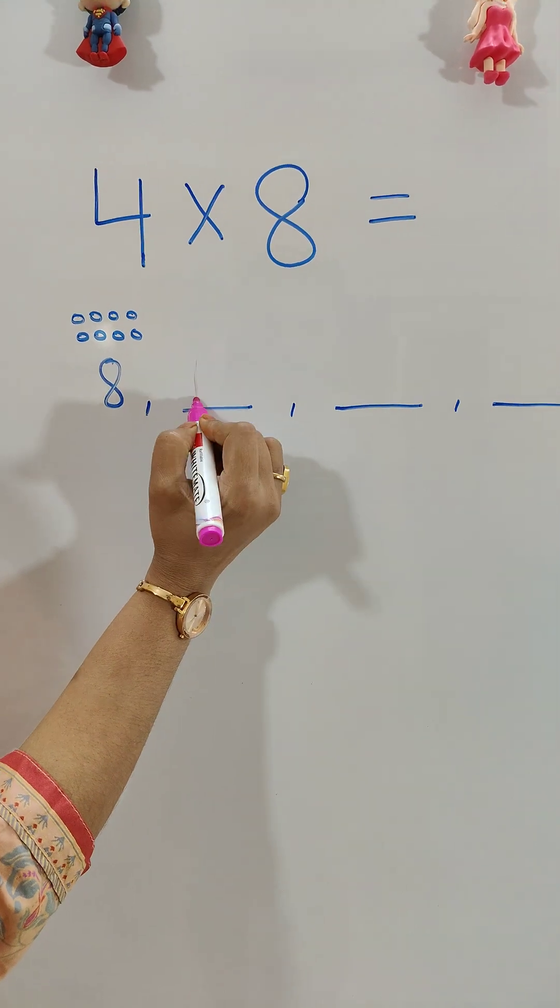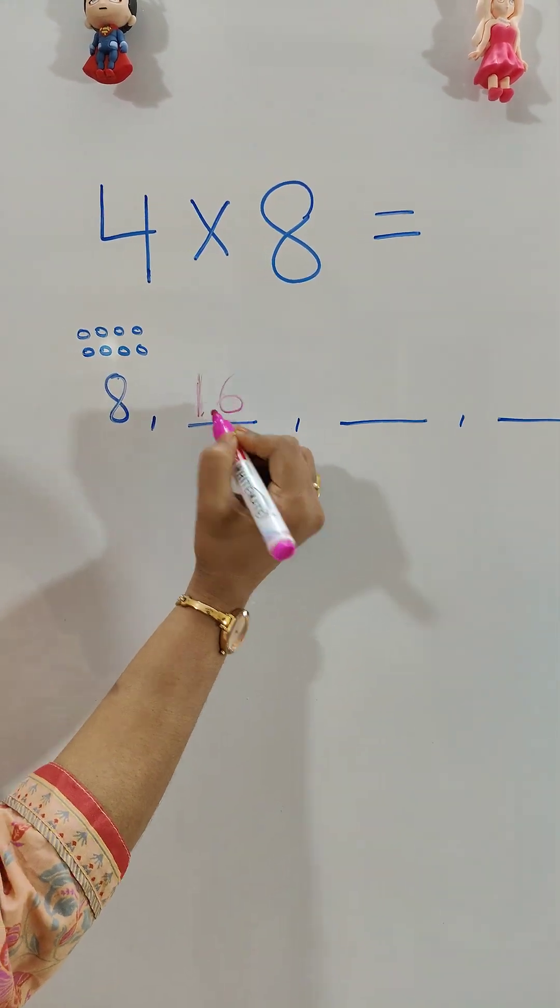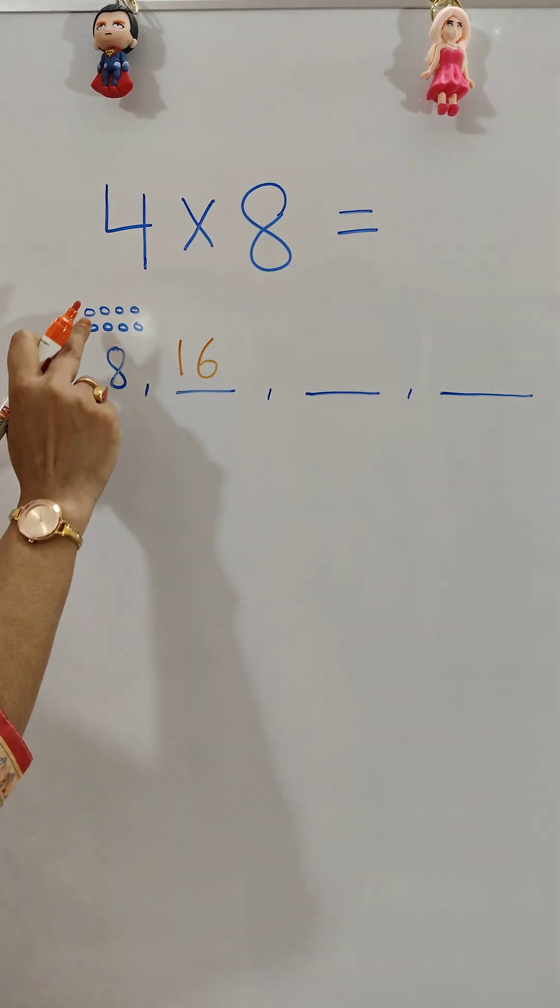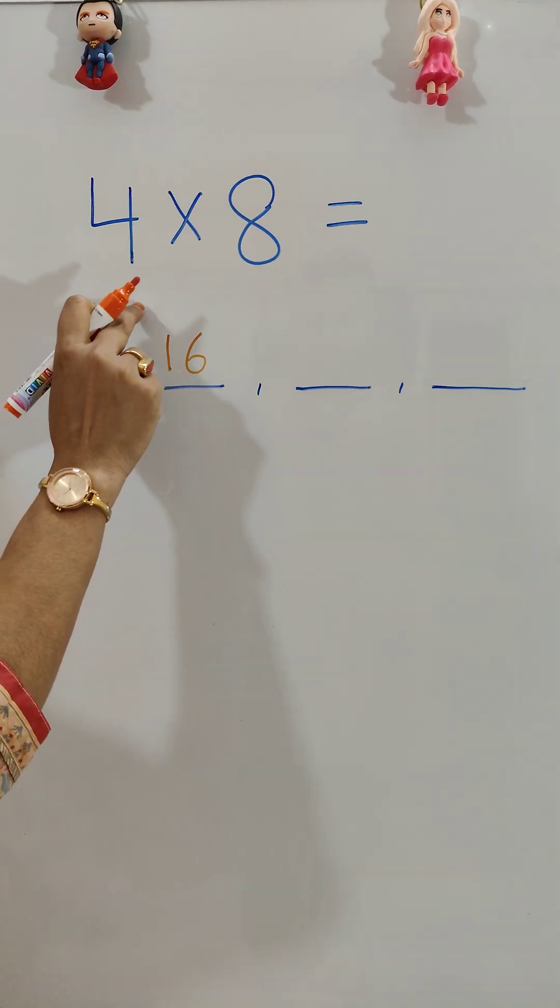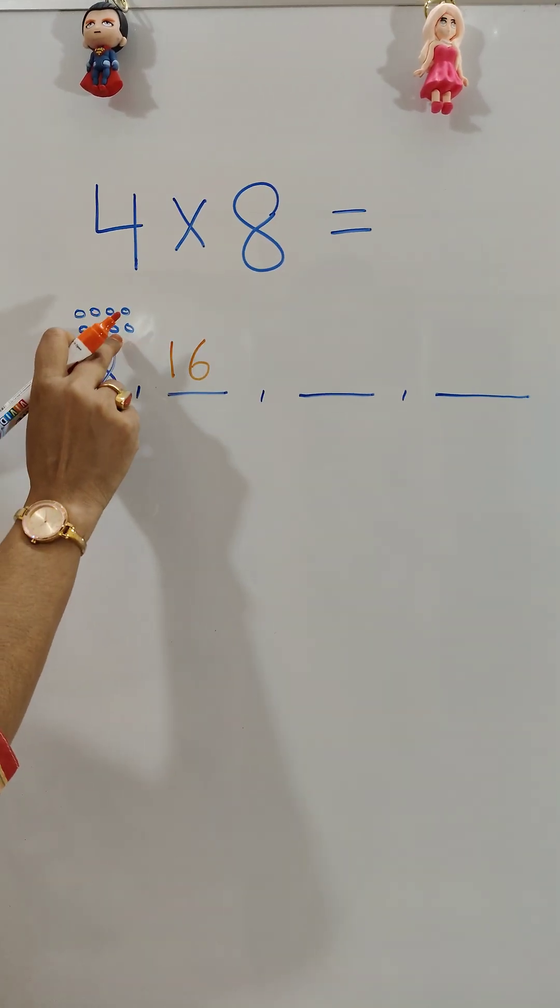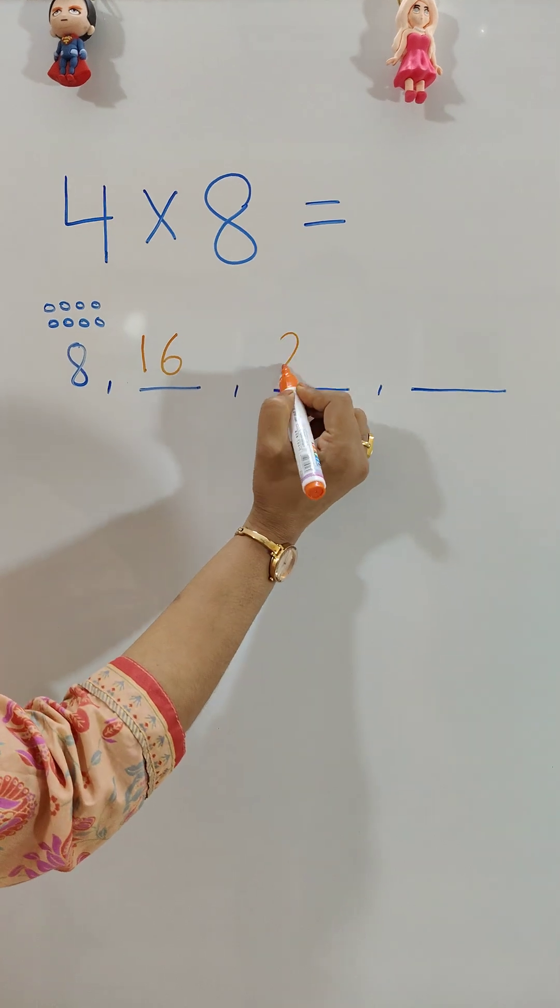After 16... 17, 18, 19, 20, 21, 22, 23, 24. The next number is 24.